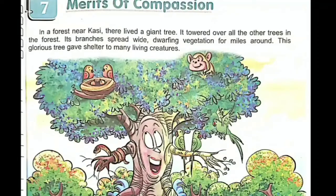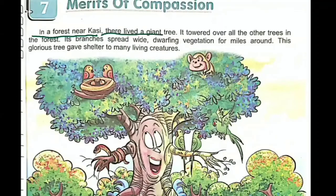In the first paragraph — in a forest near Kasi, Kasi is a place, nearby there is a forest. In a forest near Kasi, there lived a giant tree. Giant means very big, huge, enormous. You can see in the picture.